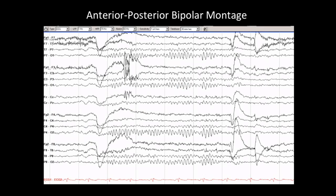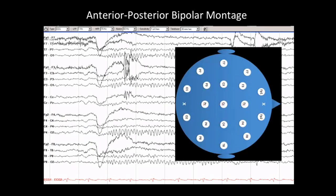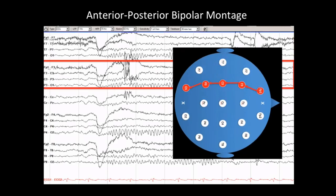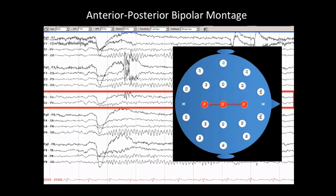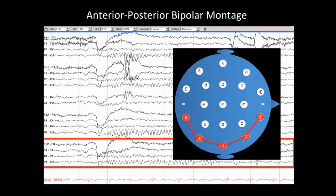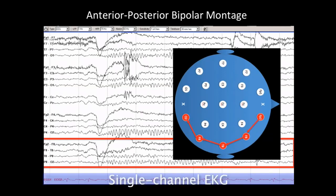The anterior-posterior bipolar montage is laid out as if looking at the top of the patient's head with the patient facing right. We first see the left temporal chain, then the left parasagittal chain, then the midline, then the right parasagittal chain, and finally the right temporal chain. At the bottom, we also see a single EKG channel.